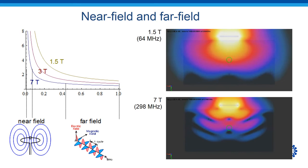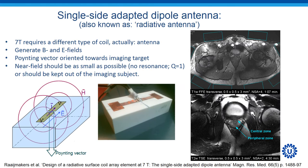Whereas at 7 Tesla, the region of interest is very much in a wave-like regime, which is approaching the far field. This shows that for prostate imaging at 7 Tesla, we need a different type of coil, or actually, we need an antenna.